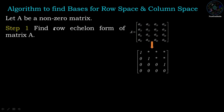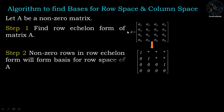Step 1: find row echelon form of matrix A. Apply row operations to get the row echelon form of matrix A. Step 2: nonzero rows in row echelon form will form a basis for the row space of matrix A.